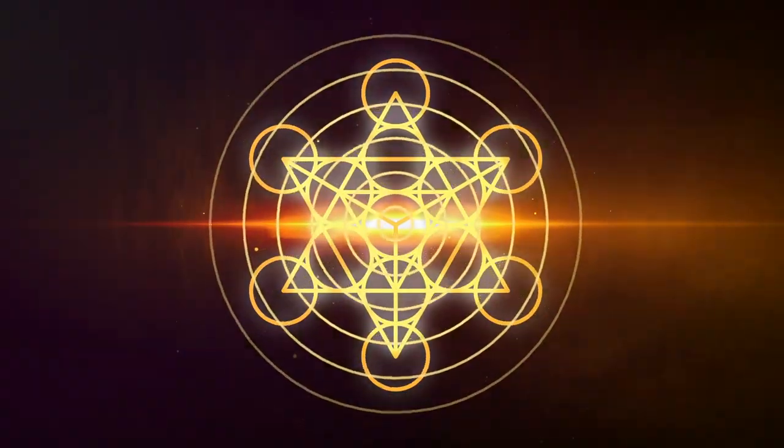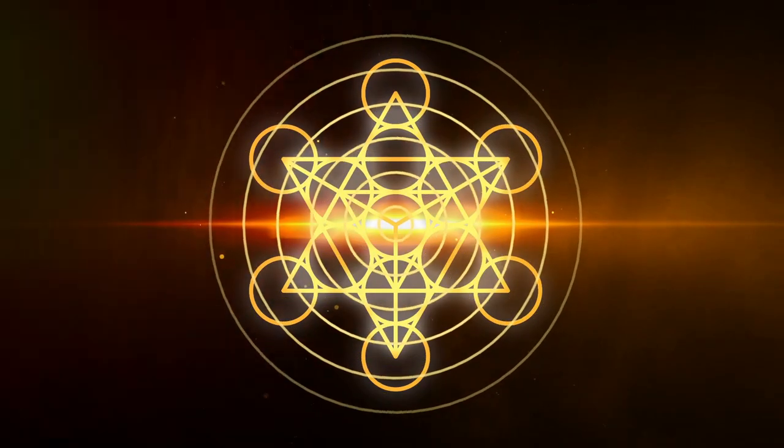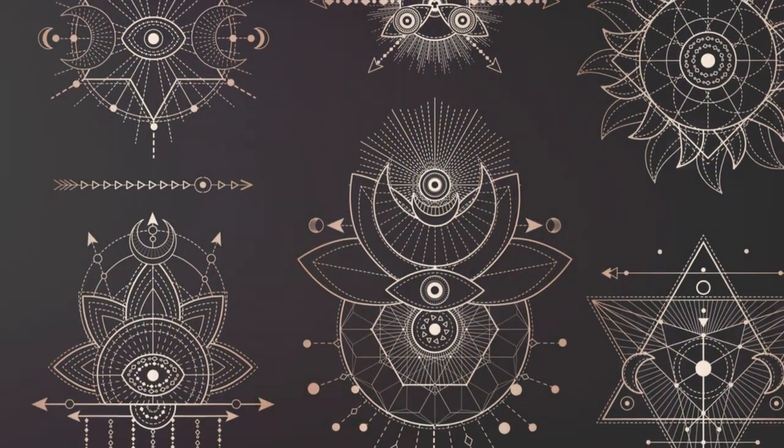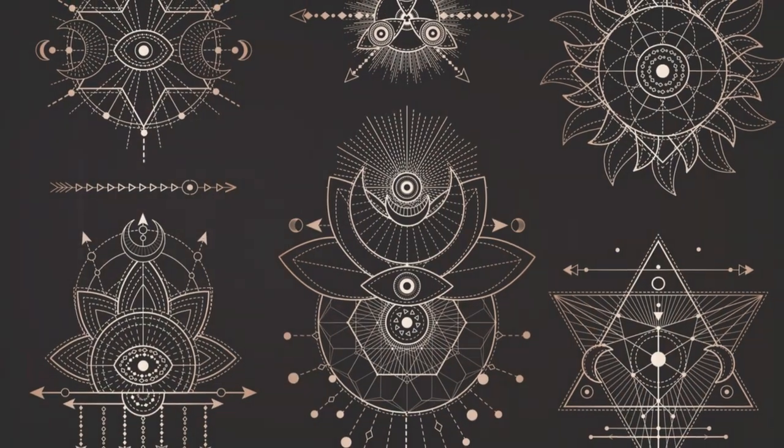The Metatron's cube is another important figure in sacred geometry. It's derived from the fruit of life, a pattern that emerges from the flower of life.